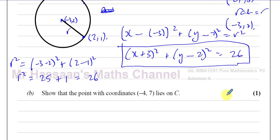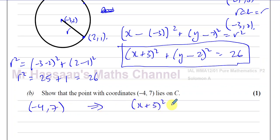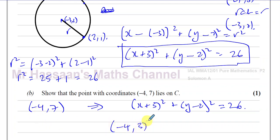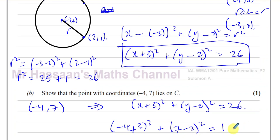For part B, it says show that the point with coordinates negative 4, 7 lies on C. So the point negative 4, 7 should satisfy the equation x plus 3 squared plus y minus 2 squared equals 26. Substituting x equals negative 4 and y equals 7, we get negative 4 plus 3 squared plus 7 minus 2 squared, which is minus 1 squared plus 5 squared, giving us 1 plus 25, which equals 26.